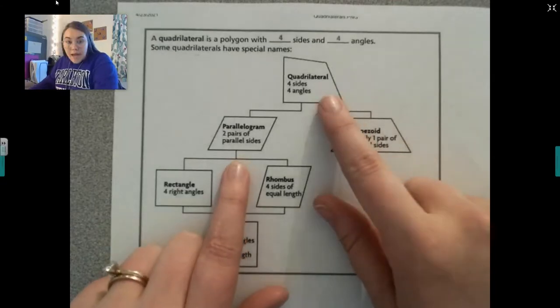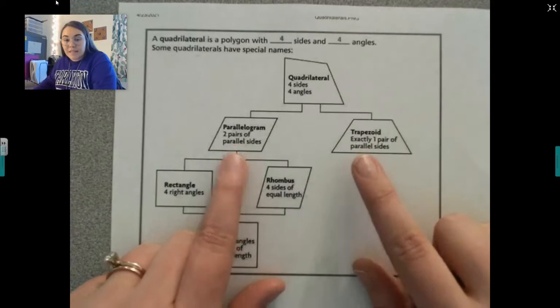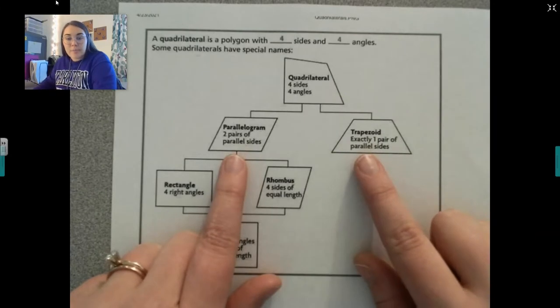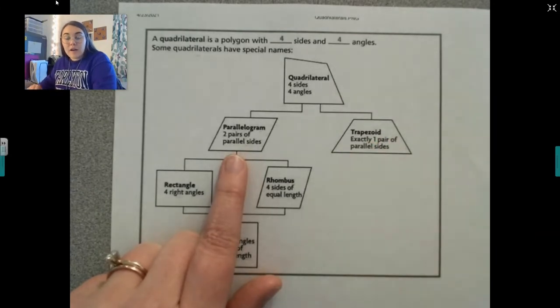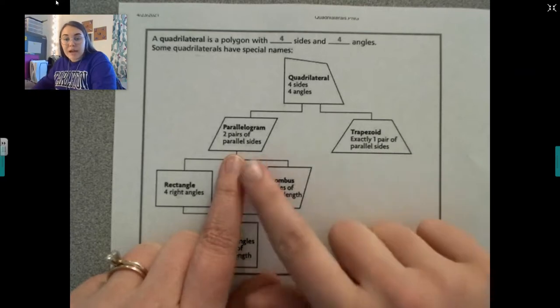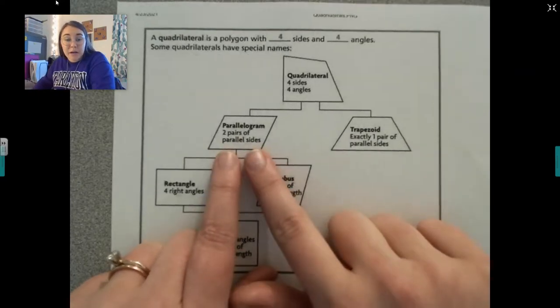Then, once you decide if it has four sides and four angles, you've got to decide, is it a parallelogram or a trapezoid? Well, if it has one pair of parallel sides, it's a trapezoid. And if it has two pairs of parallel sides, it's a parallelogram.